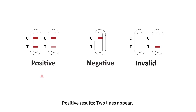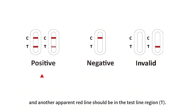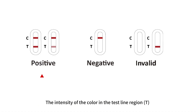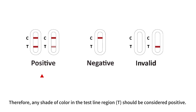Interpretation of results. Positive results: two lines appear. One red line should be in the control line region (C), and another apparent red line should be in the test line region (T). The intensity of the color in the test line region (T) will vary depending on the concentration of H. pylori antigen present in the specimen. Therefore, any shade of color in the test line region (T) should be considered positive.